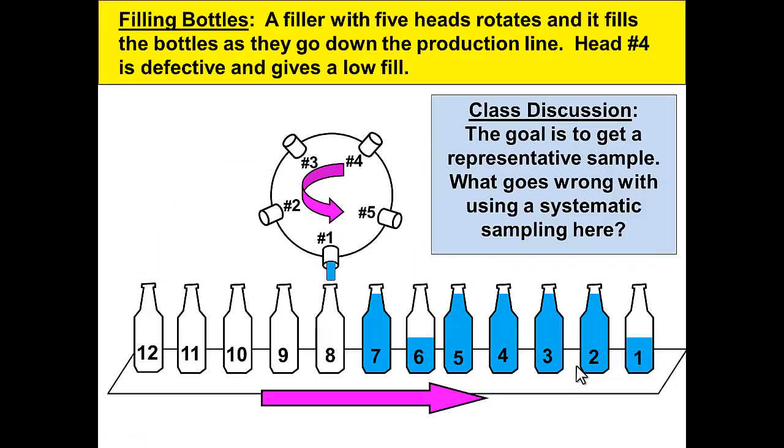Look at this situation. Filling bottles. A filler with five heads rotating fills the bottles as they go down the production line. Head number four is defective and gives a low fill. The goal is to get a representative sample. What's wrong with using a systematic sampling here?